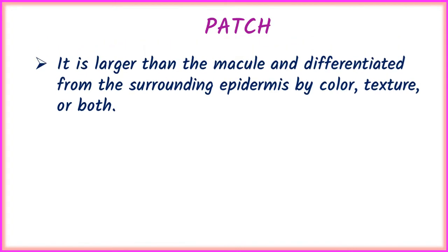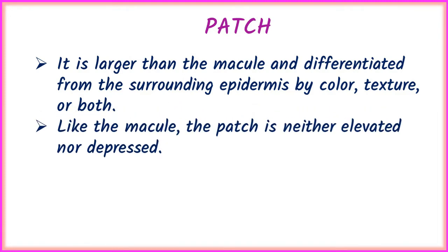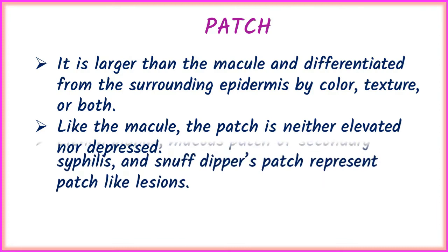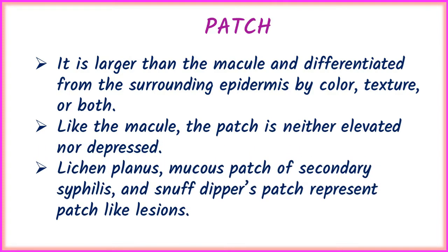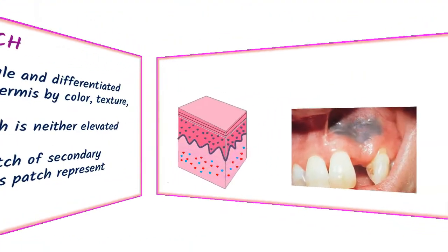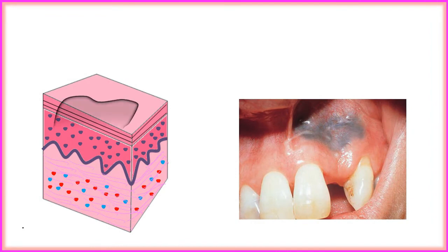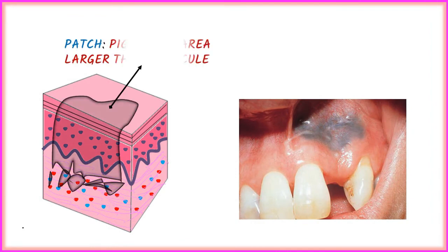The next term is patch. It is larger than a macule and differentiated from the surrounding epidermis by color, texture, or both. Like the macule, a patch is neither elevated nor depressed. Examples include lichen planus, mucous patch of secondary syphilis, and snuff dipper's patch.